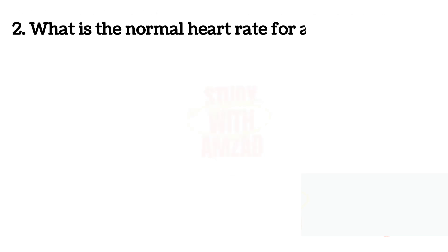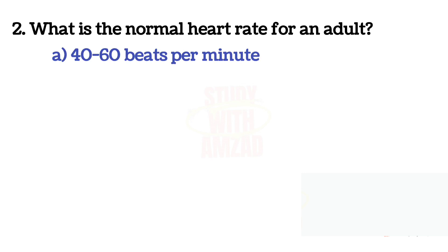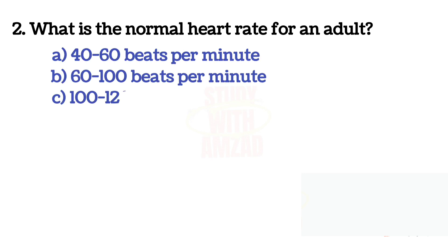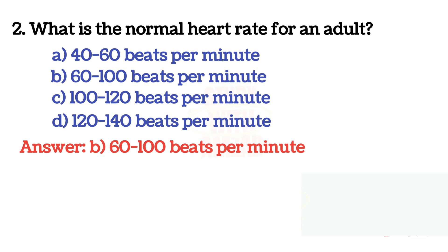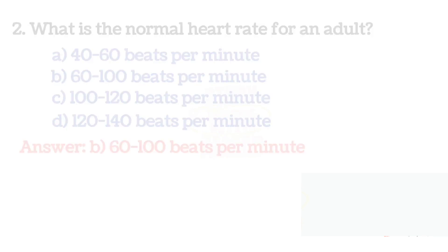Next question: What is the normal heart rate for an adult? The correct answer is B: 60 to 100 beats per minute.